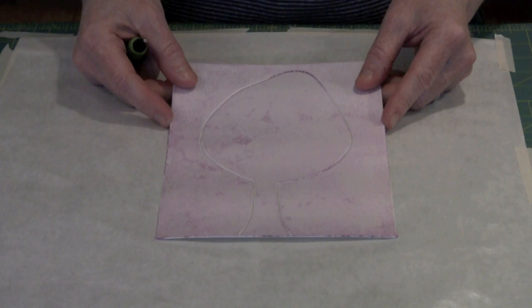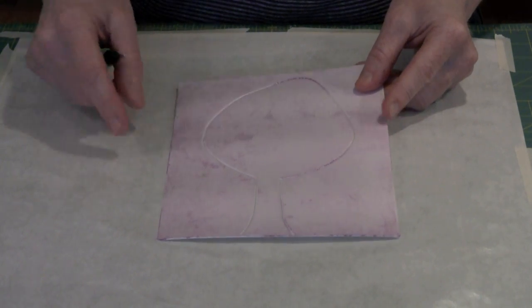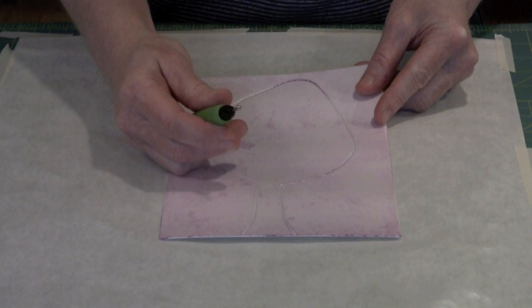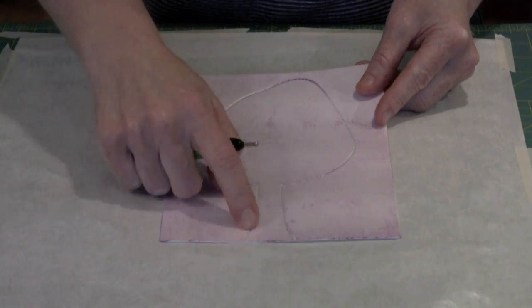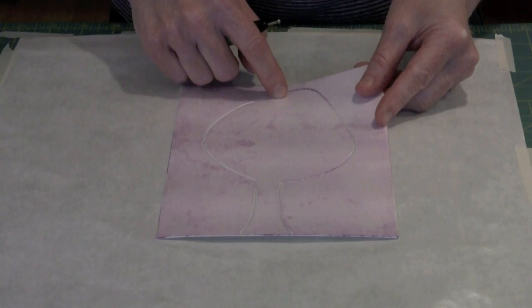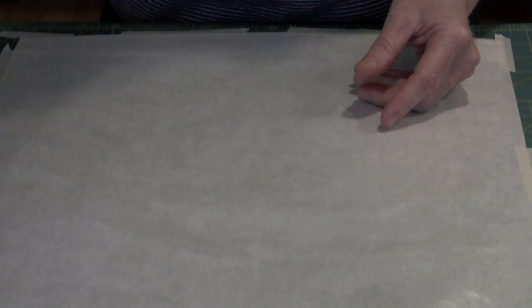When you think about using scratch foam as a print plate, what probably comes to mind is to take your design and draw it on here with something like this ball stylus. It creates a depression in the foam that you're going to then ink up and print. And I'm going to show you that quickly once, just in case you haven't seen the other video.